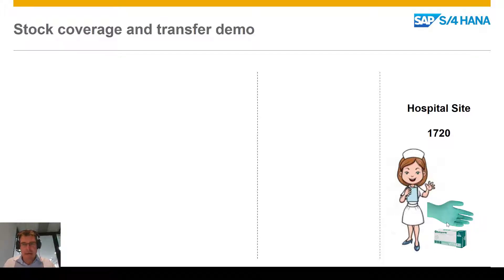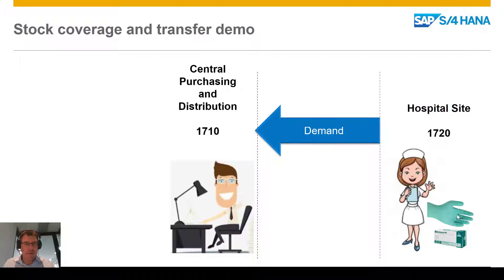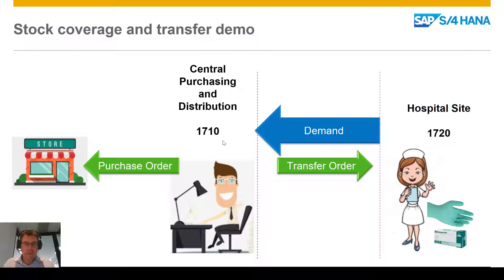The hospital site has a plant number of 1720 and they want some new green latex free gloves. That demand is going to come in, and it could come in a number of ways: from purchase requisitions being raised, from a planning system such as IBP pushing down requirements, or from any other system where we've put in the expected demand. I'm then going to show how that demand gets pushed through to a central purchasing plant, plant number 1710. Running MRP is going to generate purchase orders and transfer orders to fulfill that.